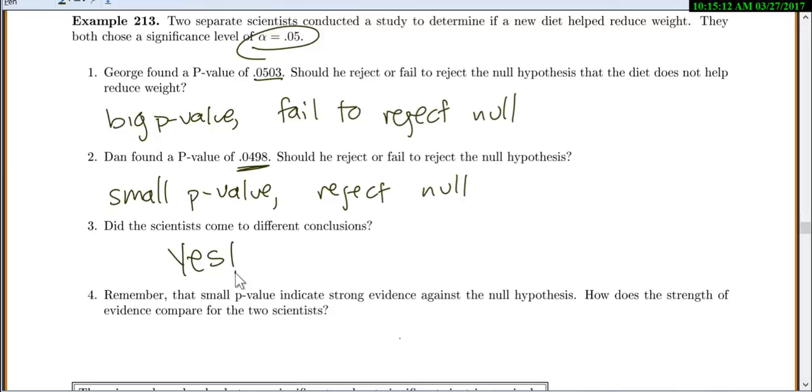And so, yes, they came to different conclusions. George is going to say he doesn't have enough evidence to say that diet helps reduce weight. But Dan is going to say, yes, I found evidence that diet helps reduce weight.